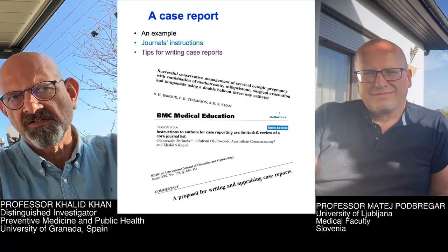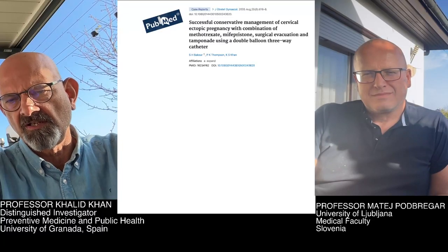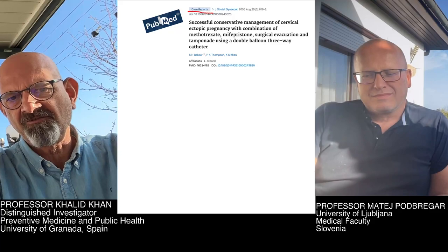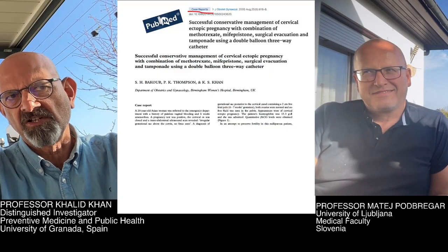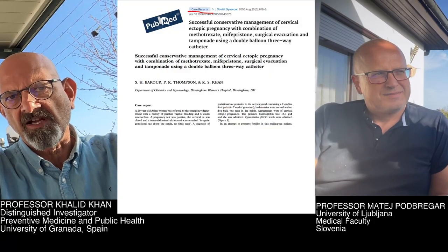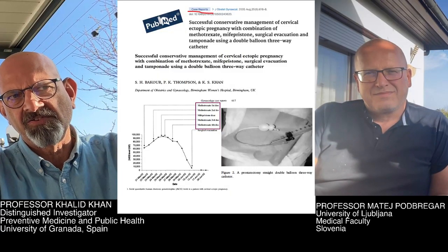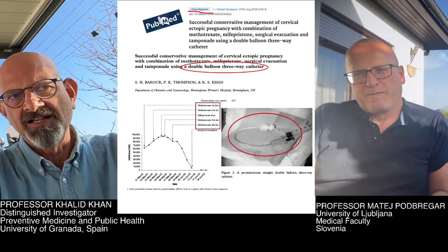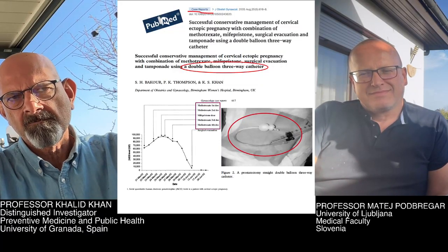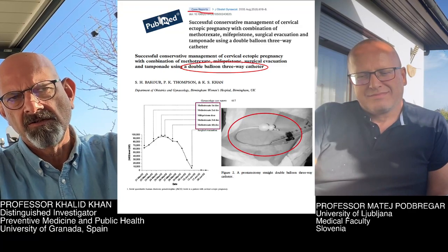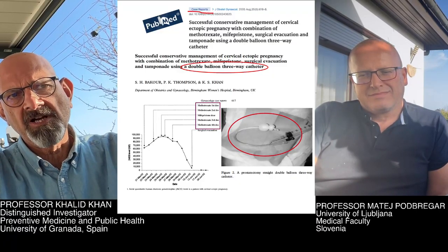Here is a case report that I co-authored with other colleagues. You can see its PubMed citation and its PDF file. The key features we wanted to cover were: in a case of ectopic pregnancy where we used methotrexate, how over time the blood HCG levels fell down, and finally when we had to evacuate the ectopic pregnancy, how we deployed a double balloon catheter for tamponade to stop the hemorrhage.